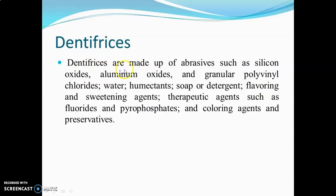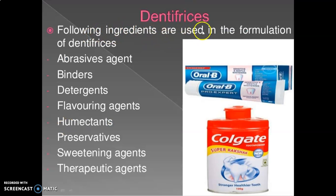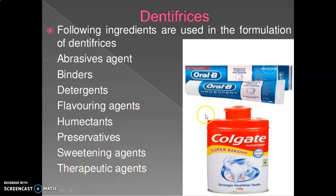Dentifrices are made up of abrasives such as silicon oxides, aluminum oxides, and granular polyvinyl chlorides, water, humectants, soap or detergent, flavoring and sweetening agents, and therapeutic agents. The following ingredients are used in the formulation of dentifrices: abrasive agents, binders, detergents, flavoring agents, humectants, preservatives, sweetening agents, and therapeutic agents.